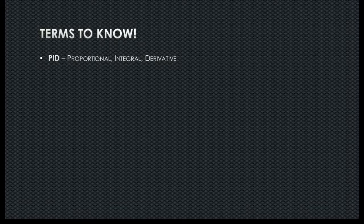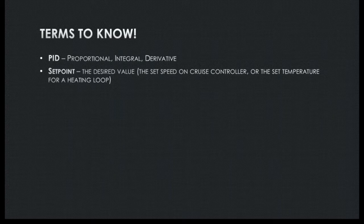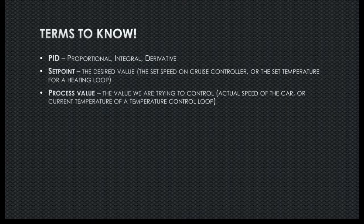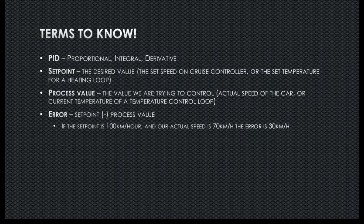Before we dive into the calculations behind the PID controller, there are a couple of terms we need to know. PID stands for proportional, integral, derivative. Set point is the desired value — in the cruise control example, it would be the set speed. Process value is the value we're trying to control — in the cruise control scenario, it's the actual speed of the car. The error is simply the set point minus the process value. So when the vehicle is set to 100 kilometers an hour but it's actually only going 70, 100 minus 70 is an error of 30.